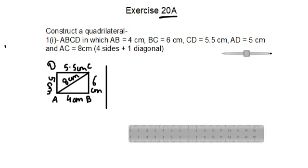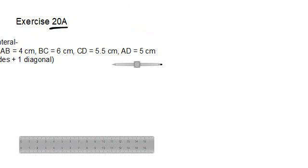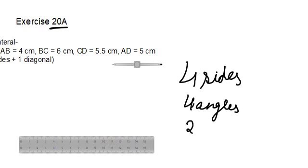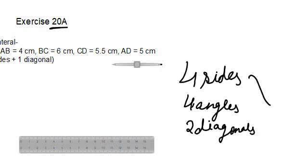In this exercise we are going to be constructing quadrilaterals. As we all know, a quadrilateral has four sides, four angles, and two diagonals — so in total there are ten elements. Out of these ten, we need only five. Any five can be given to us out of these ten things to draw a quadrilateral.